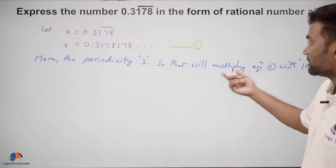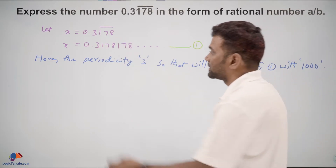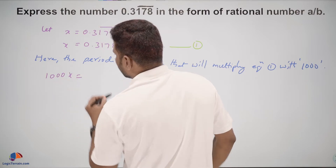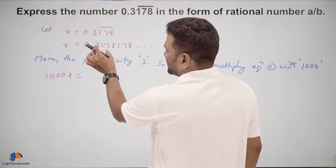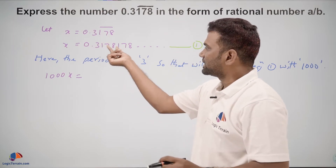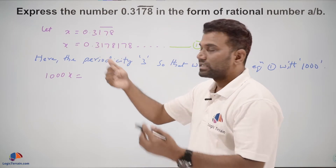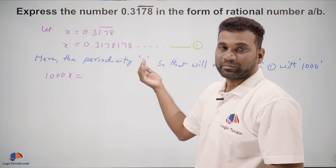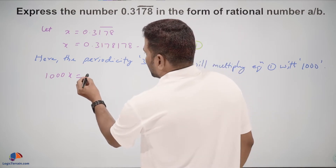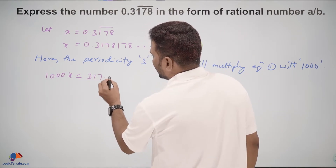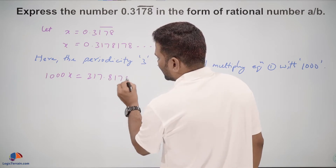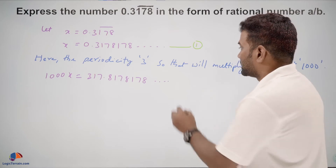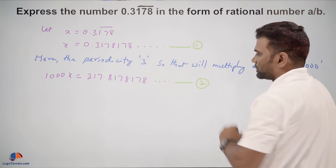We will multiply equation 1 by 1000 on both sides. So 1000x equals — when you multiply by 1000, the decimal point moves 3 places to the right — so 1000x is equal to 317.8178178 and so on. Let us call this equation number 2.